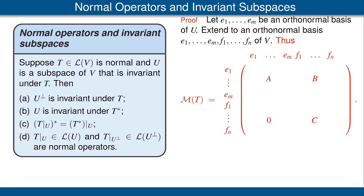Specifically, for each J, we can look at T of EJ. T of EJ will be an element of U by the invariance of U, and thus T of EJ is a linear combination of the vectors E1 up through Em. That means that in the matrix, we have 0s in the jth column below the mth row. This explains the 0 shown on the slide.